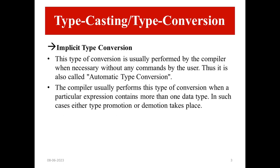Implicit type conversion: this type of conversion is usually performed by the compiler when necessary, without any commands by the user. It is also called automatic type conversion. The compiler usually performs this type of conversion when a particular expression contains more than one data type. In such cases, either type promotion or demotion takes place.